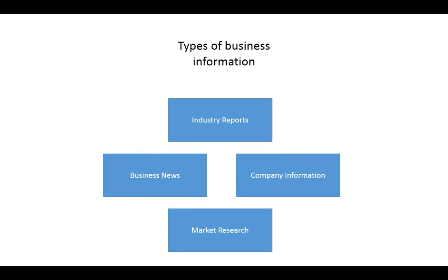There are some basic categories of the kinds of information you might look for: industry analysis and data, company information, general or industry-specific news and trends, and market research. Industry information or industry reports refer to growth and revenue trends, average profit margins, information about how an industry operates internally and how competition is structured, as well as information about product and market segmentation.